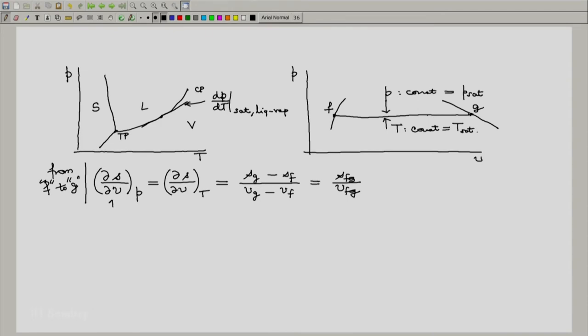Now notice that both these partial derivatives are represented in the Maxwell's relation. So without spending much time on it, I will use the relations and will be able to show, I recommend that you check this out. Partial of S with respect to V at constant p equals partial of p with respect to t at constant v.